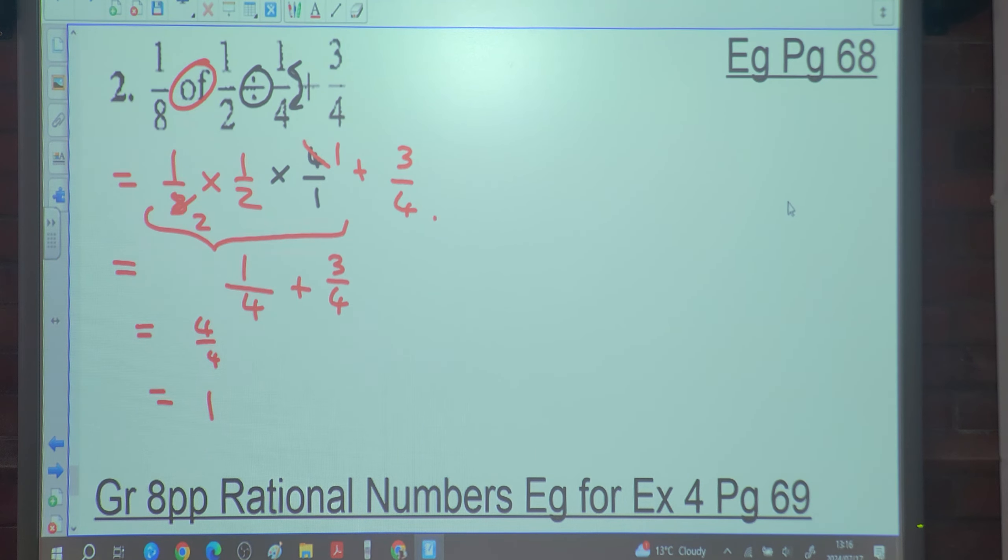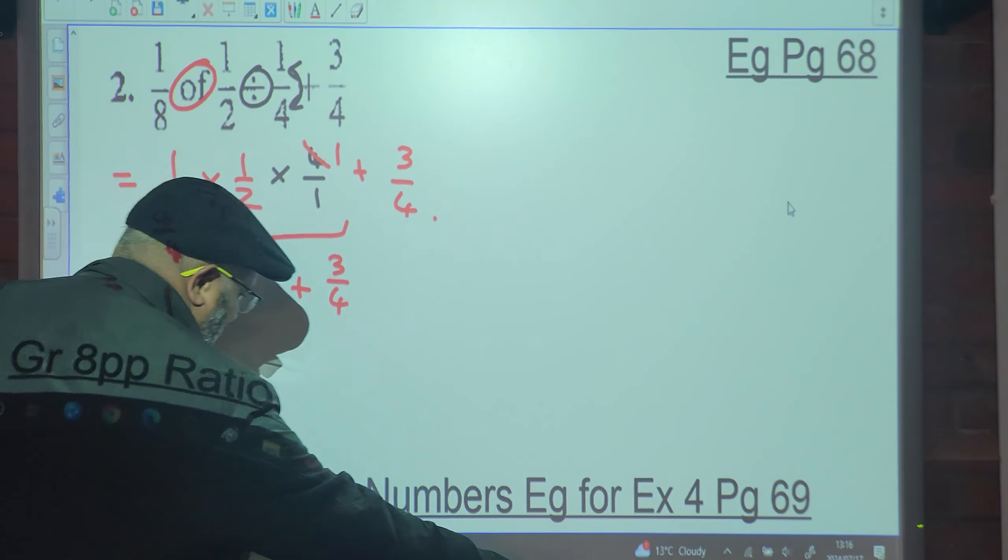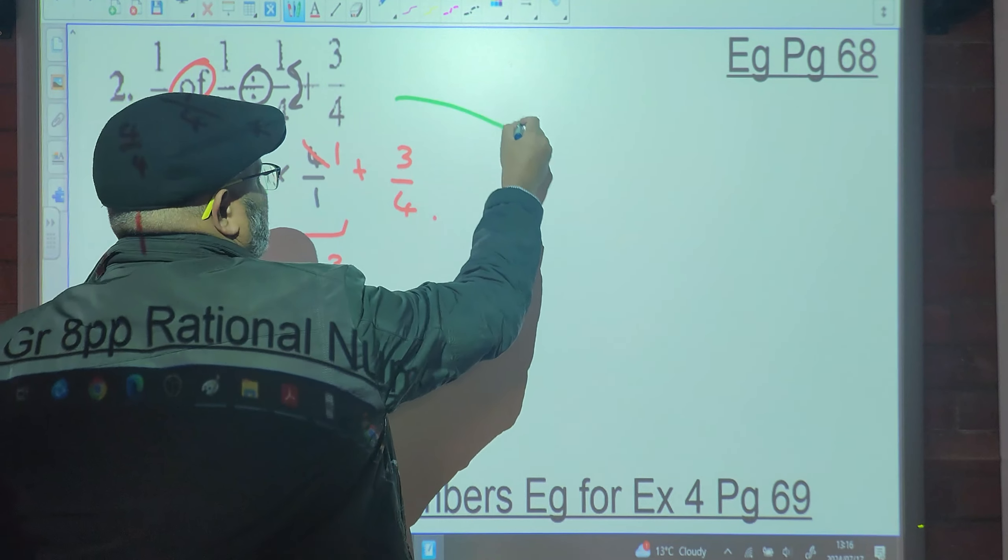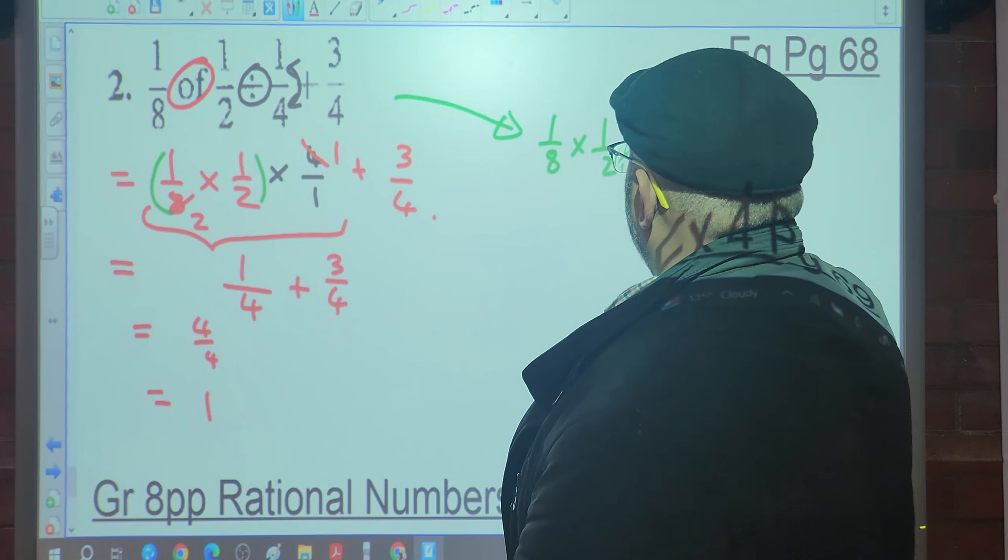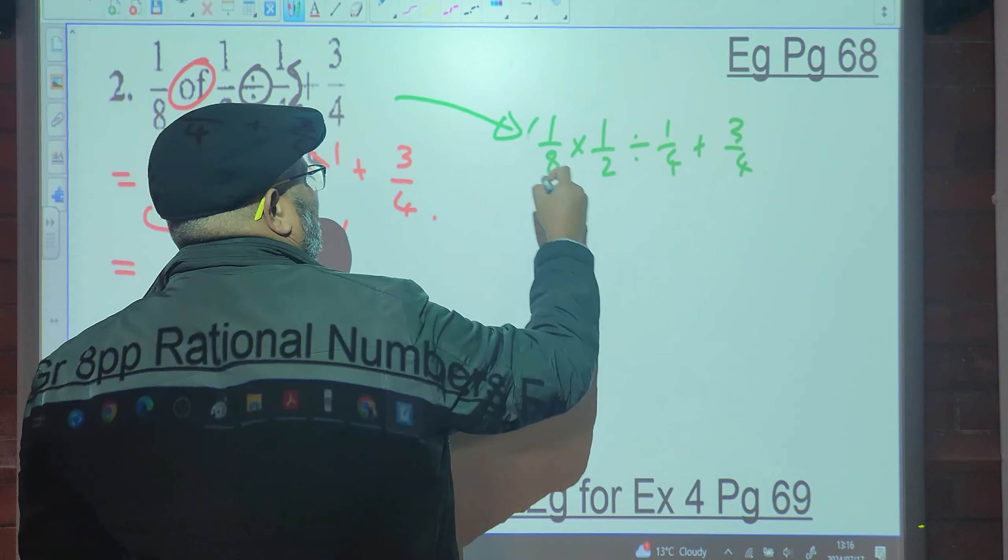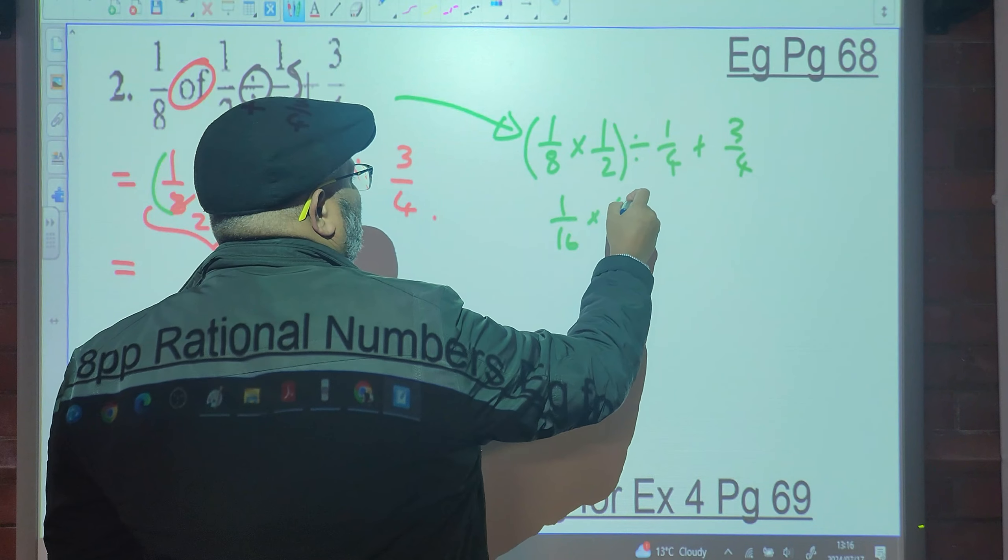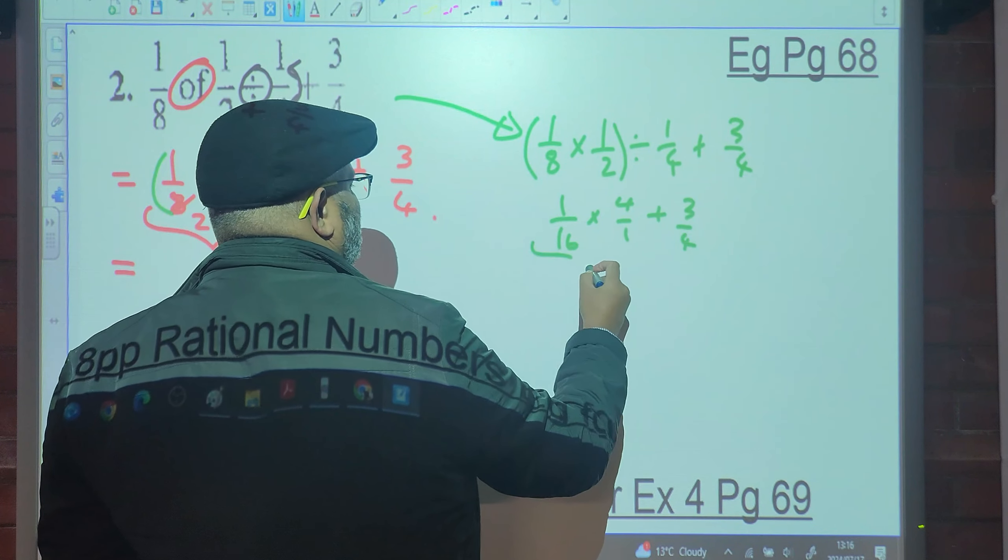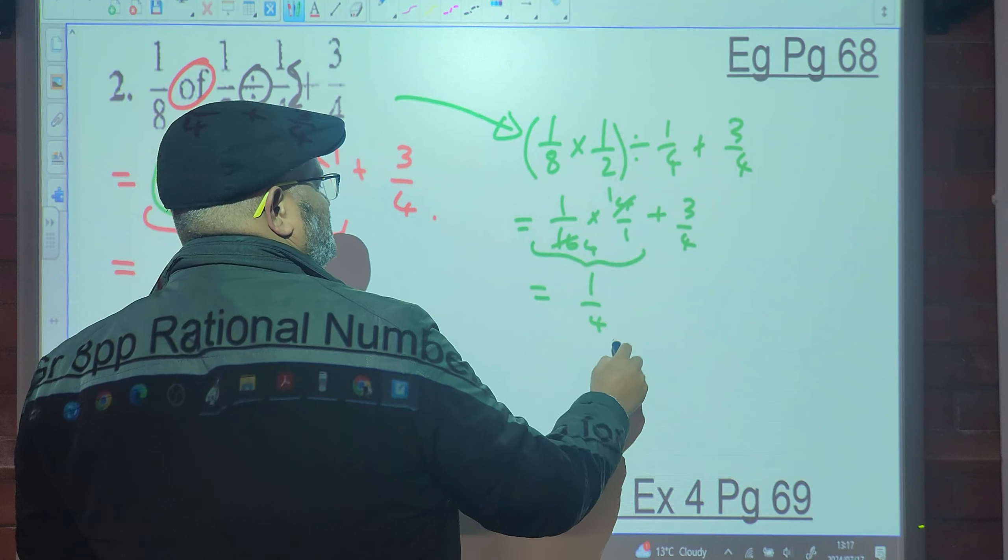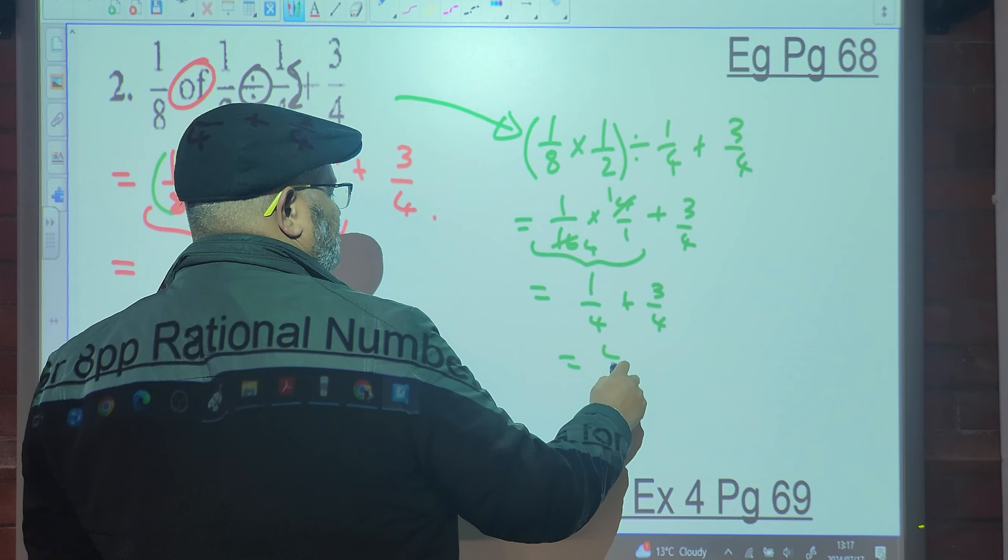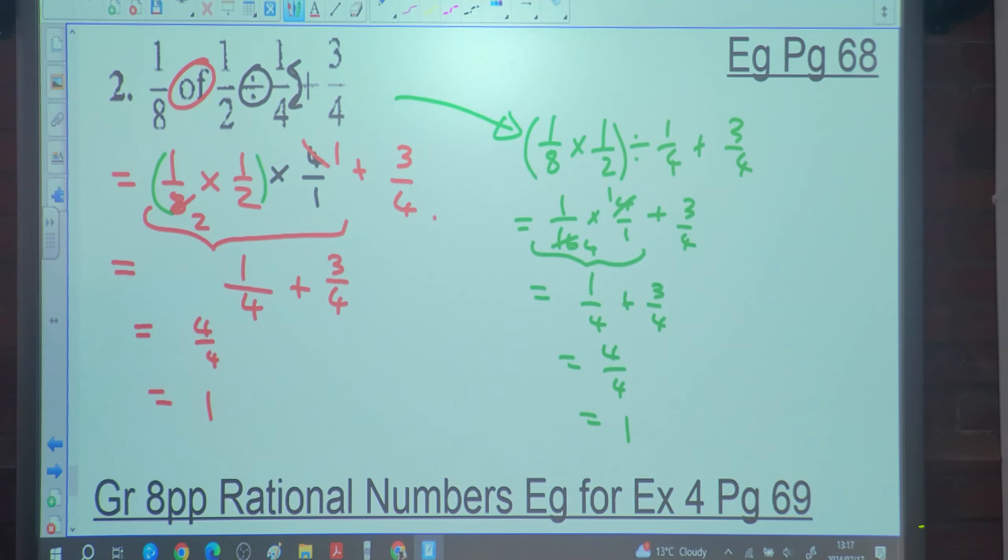So what's one quarter plus three quarters? Four quarters. Which is one. Any confusion there? If you had done this first, you would have seen you've got the same thing. So it doesn't matter in this case. It's the same thing. Do you guys understand? Any confusion?